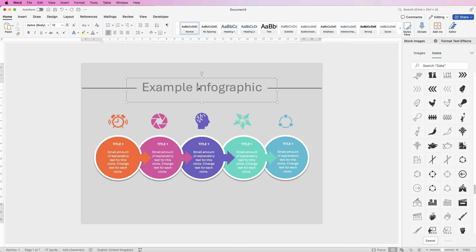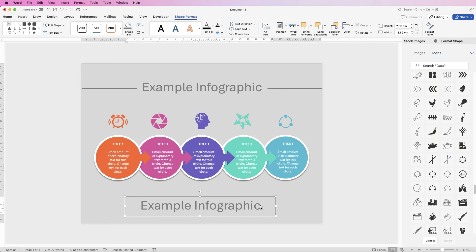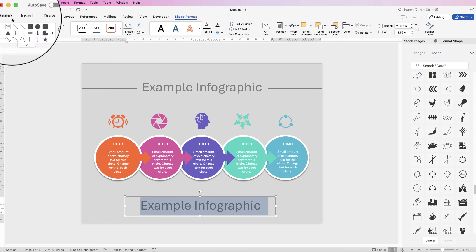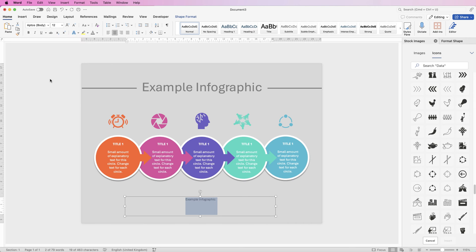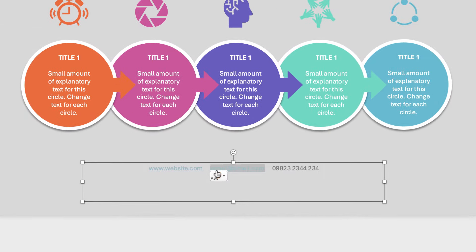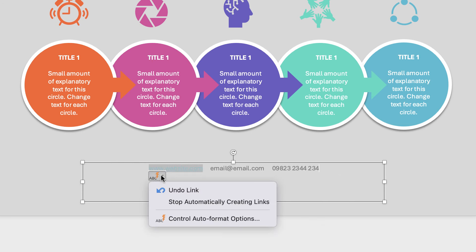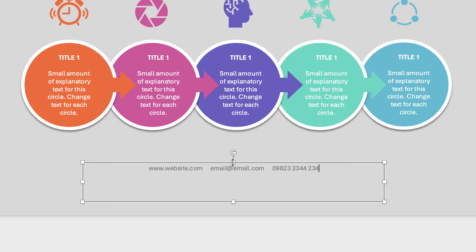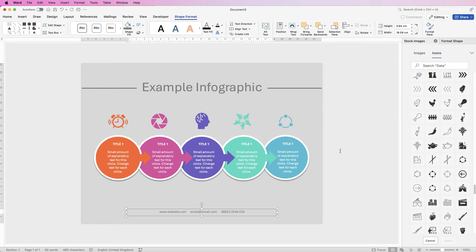For text at the bottom, select the existing text box, hold down Alt or Option and drag to copy it. Select the text, go to the Home tab, set the font size to 12, then type in your website, press Tab, and add a number. If you don't want hyperlinks turning blue, hover over the blue element, click the drop-down and select Undo Hyperlink. Move it down, go to Shape Format, Align, Align to Center, and deselect.